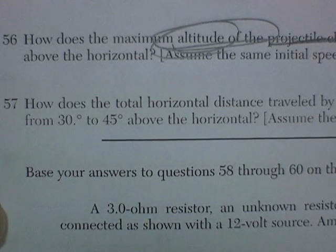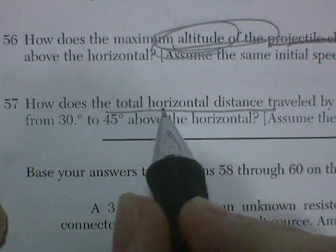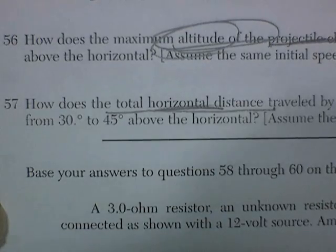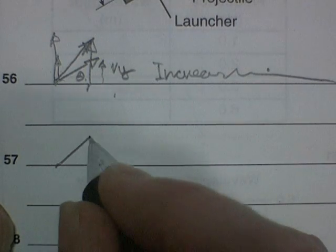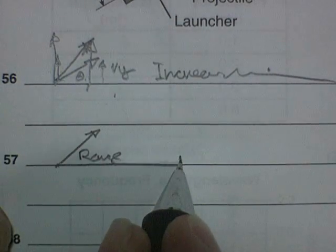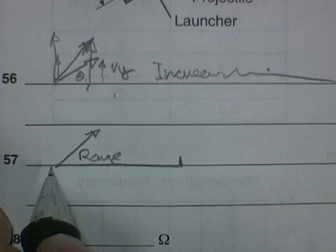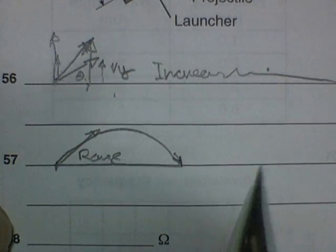Question 57 is also essentially a concept question. How does the total horizontal distance traveled by the projectile change as the launch angle is increased from 30 to 45 degrees? You need to remember this one: maximum range is at 45 degrees. The range is the total distance the projectile travels, and maximum range is at 45 degrees.